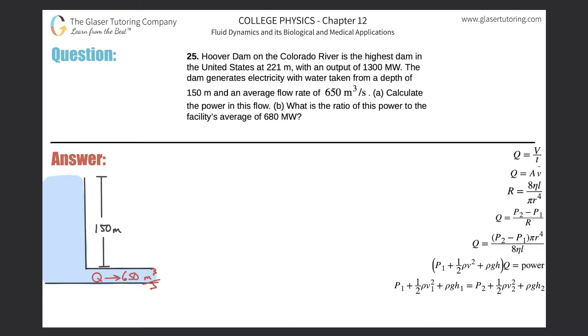Number 25. Hoover Dam on the Colorado River is the highest dam in the United States at 221 meters with an output of 1300 megawatts. The dam generates electricity with water taken from a depth of 150 meters and an average flow rate of 650 cubic meters per second. Letter A, calculate the power in this flow. Here we go, right here is basically the height of the dam, or the height of the water at least. The water is going to exit out of a hole in the bottom. It has a certain flow rate down here. What we need to do is figure out or calculate the power of this particular flow at the bottom.